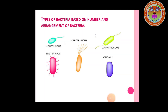Bacteria are also classified into five groups based on the number and arrangement of flagella. If a bacterium has a single flagellum at one end, it is called monotrichous. If it has one flagellum at both ends, it is called amphitrichous. A bunch of flagella at one end is called lophotrichous. Flagella all around the body is called peritrichous. If there is no flagellum, it is called atrichous.